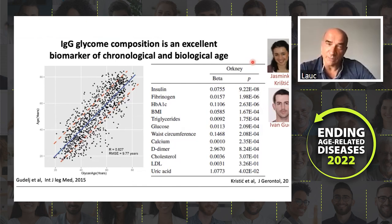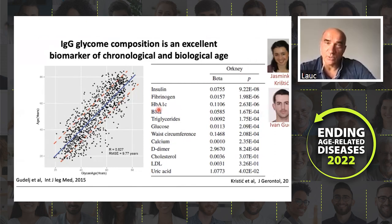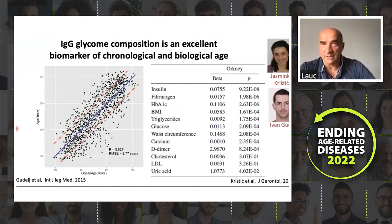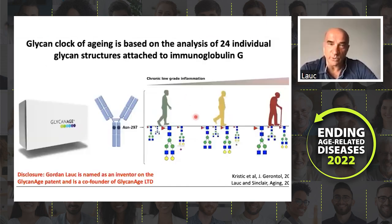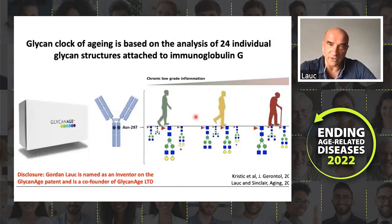The most interesting thing about this clock of aging was that the delta between the glycan age and the chronological age was explained by biomarkers known to be related with unhealthy lifestyle — things like high insulin, fibrinogen, HbA1c, BMI, and so on. Today we have this glycan age index, which is a commercial test that is commercially available.